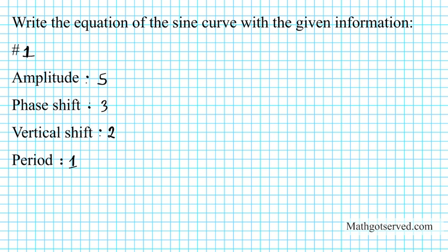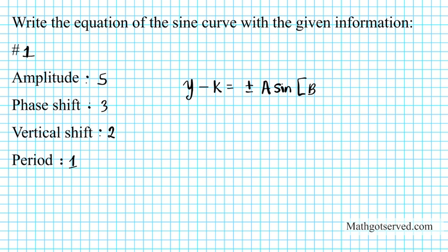The instructions are to write the equation of the sine curve with the given information. The amplitude is five, phase shift is three, vertical shift is two, and the period is one. The main thing we need to know to do these problems is the transformational form for the equation of a sine curve, which is y minus k equals plus or minus a sine bracket b times x minus h.